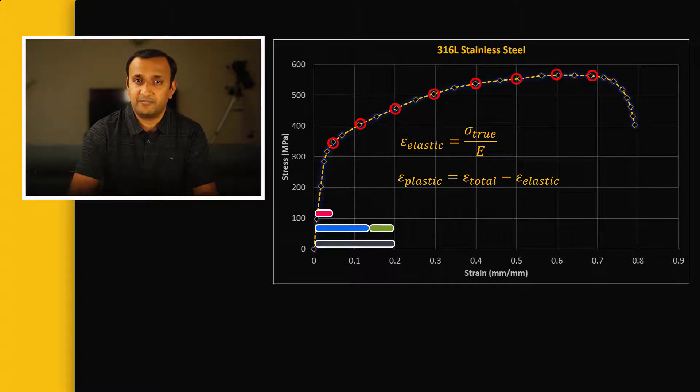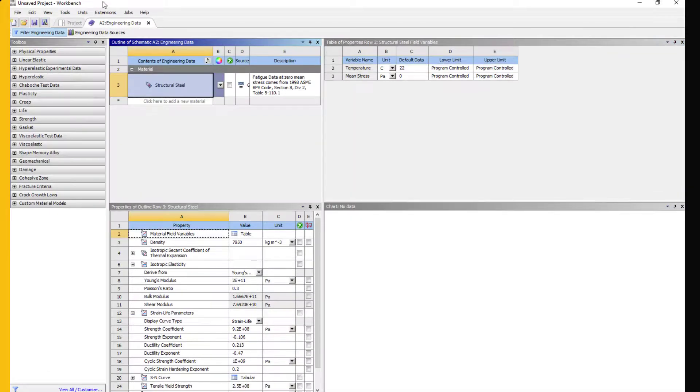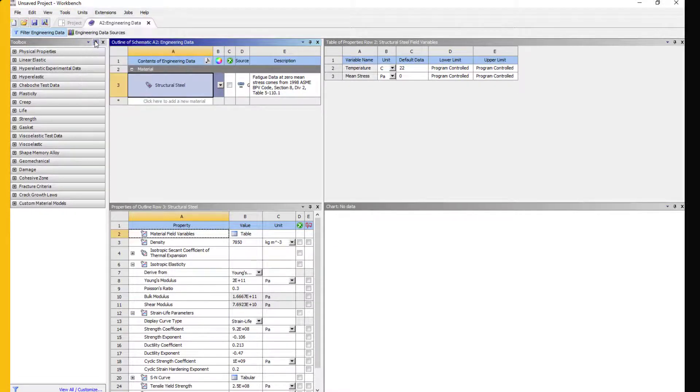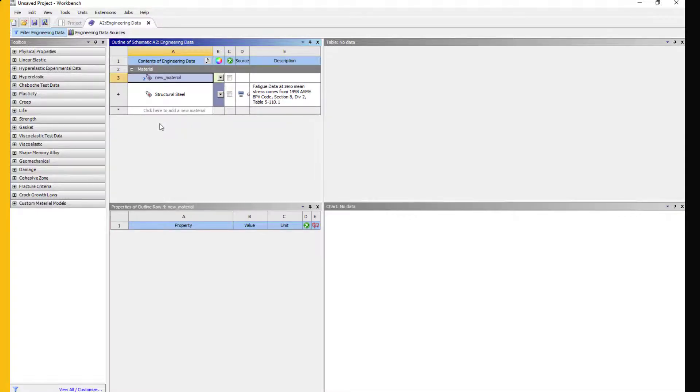Our data is ready now. Let's go back to the engineering data and see how to define linear elastic material properties as well as multilinear stress-strain data. Open engineering data and make sure that the units are set to a system your data is measured in. In the table of engineering data, define new material. This only gives the name to the material that we will define next.